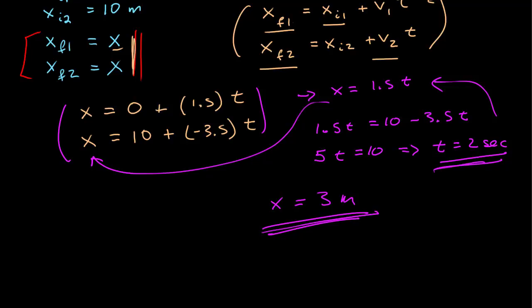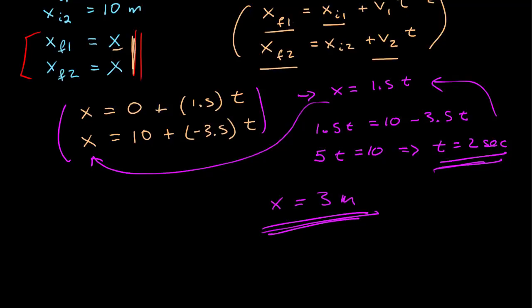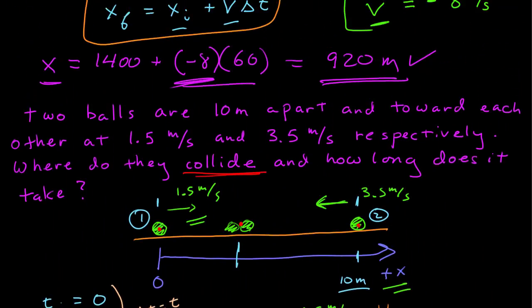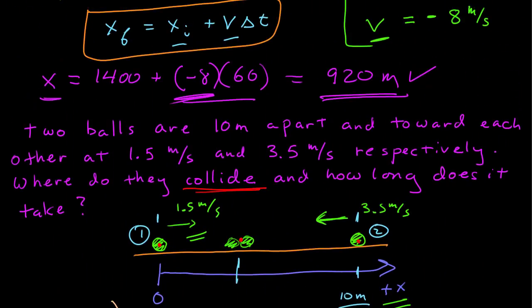Finally, let's check whether the answers make sense. Two seconds could be reasonable. Three meters certainly makes sense — it's less than five meters, and we predicted the collision would happen on the near half of the picture. Given the diagram, those answers make sense.